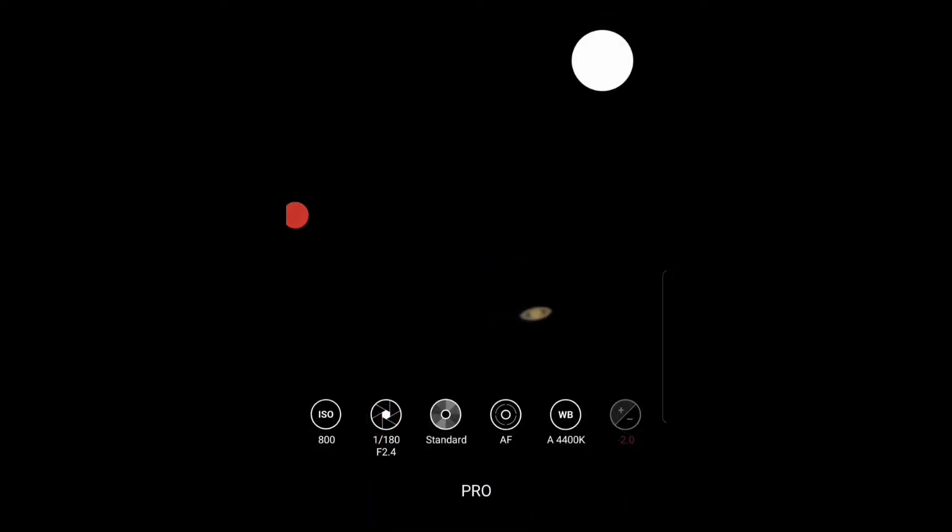Here we have the planet Saturn through the Meade Infinity 80 millimeter. I did zoom in a little bit with the camera on the cell phone that I'm recording this with. That is Saturn as it is moving through our sky, and that's how it appears in the telescope. Visually it does look a bit better than that, but you can clearly see the planet and its rings.